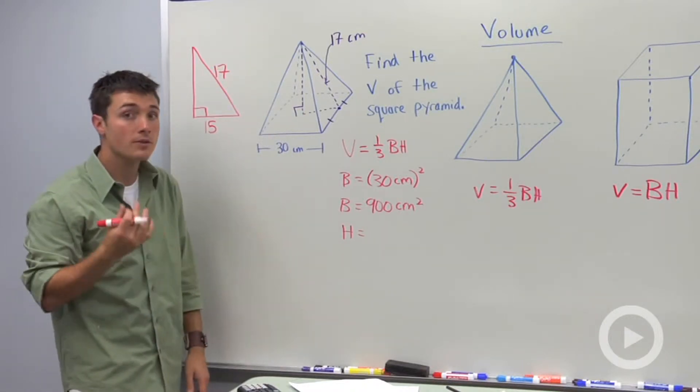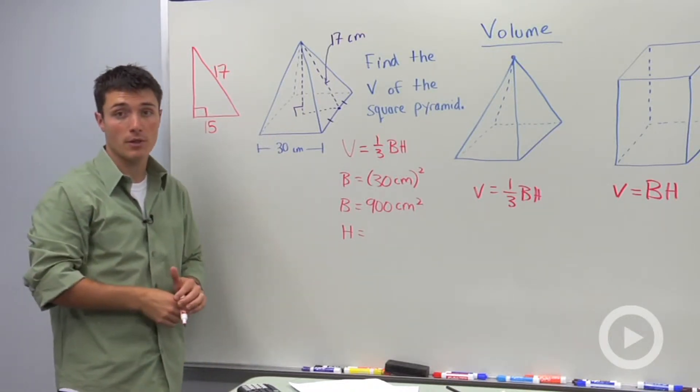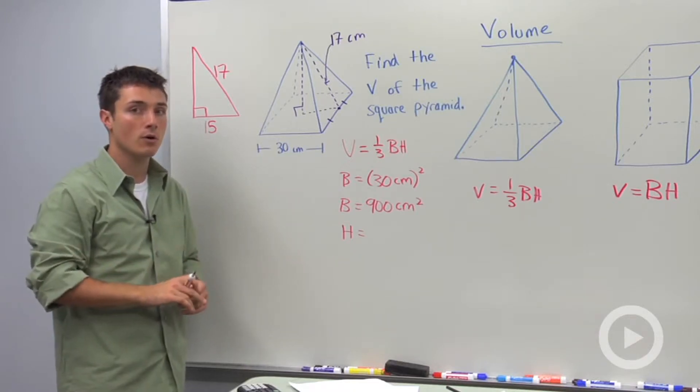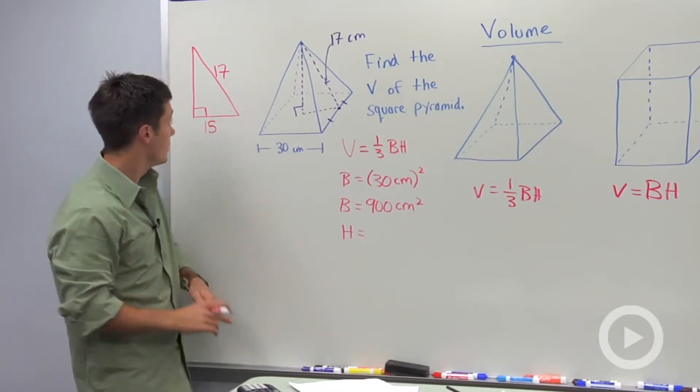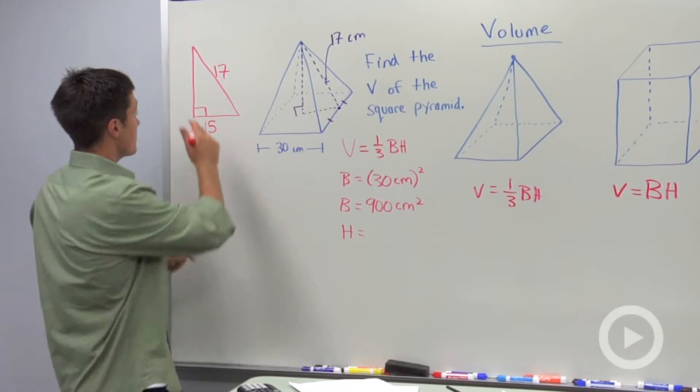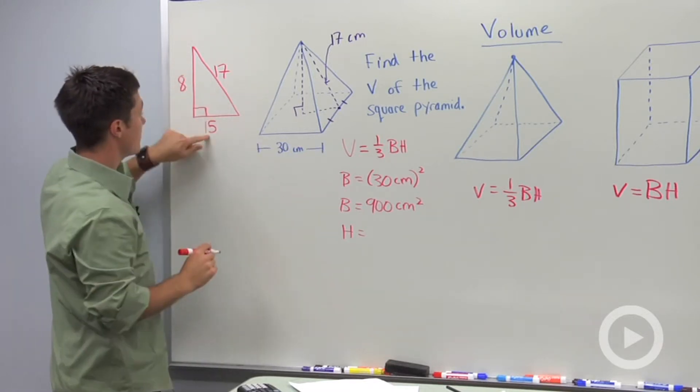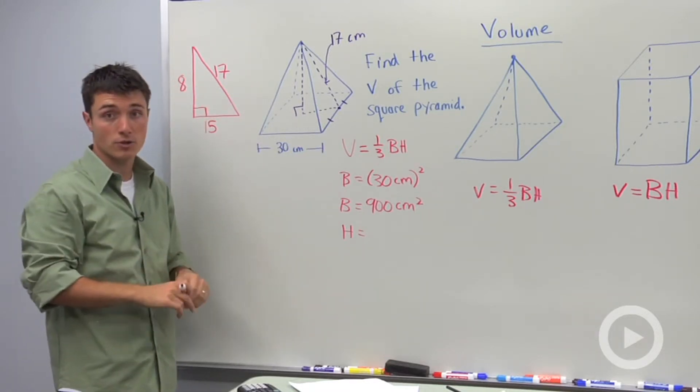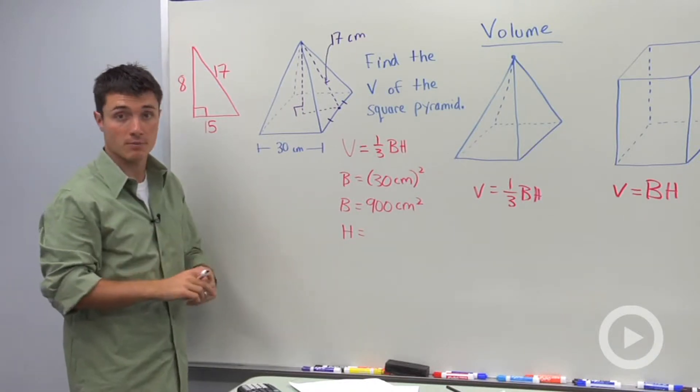So I'm going to write 17. Now at this point, you could plug it into the Pythagorean theorem, but hopefully you still have your Pythagorean triples memorized. So that way, you could just say this must be 8, because 8, 15, 17 is a Pythagorean triple, which means that your height must be 8 centimeters.